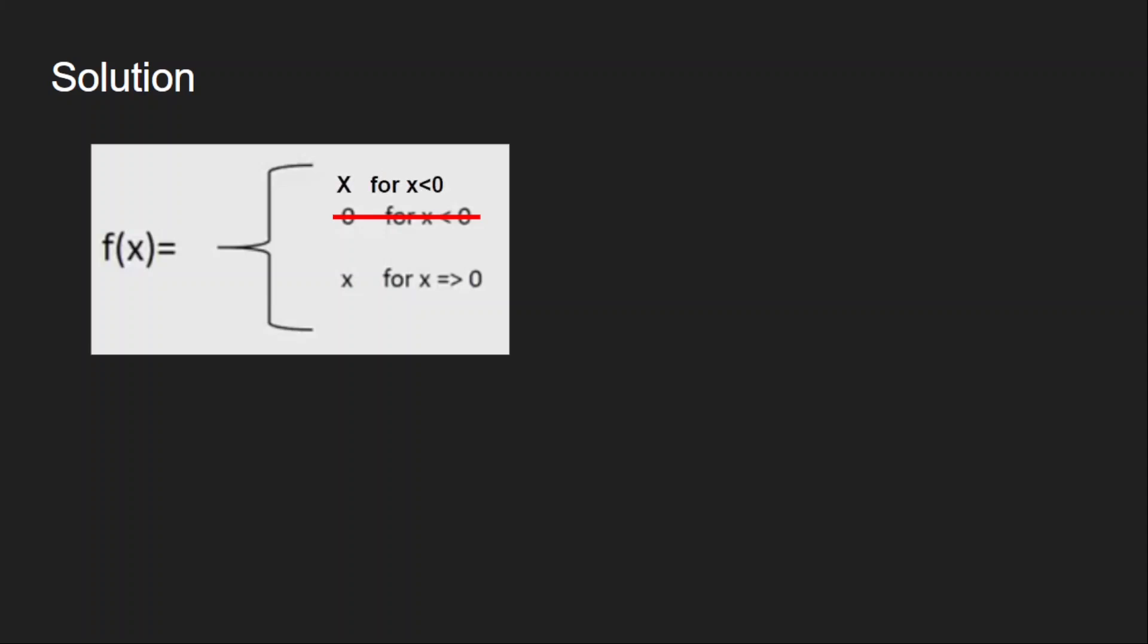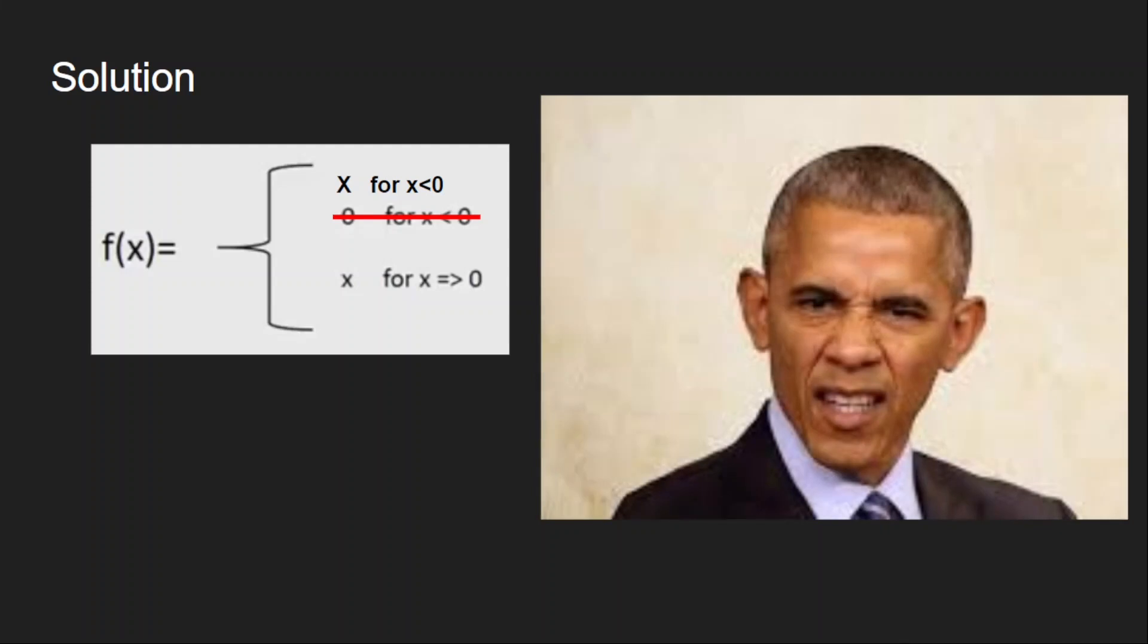What if we pass the same x in case of negative also? Yeah, I know it's bad. It's just a linear function. It is as bad as not having any activation function. Okay, then what should we do? What if we take some fraction of the input?